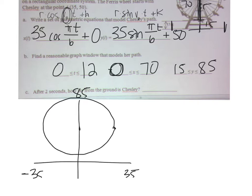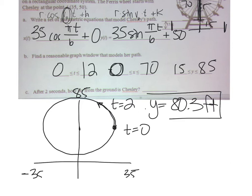Okay, so it starts here at t equals 0, and as I traced up, I got at t equals 2 the y value is 80.3 feet. So after two seconds, Chesley is 80.3 feet off the ground.